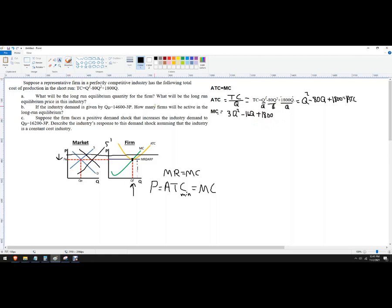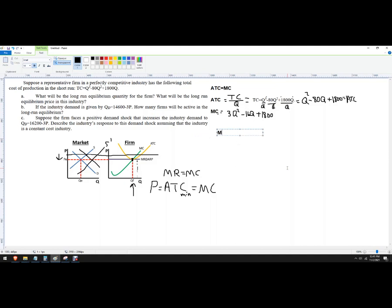So to find the quantity for each firm, long run equilibrium quantity, I'm just going to set marginal cost equal to average total cost. And this means that 3Q squared minus 160Q plus 1800 needs to equal 8Q squared minus 80Q plus 1800. The 1800s are going to cancel out there.